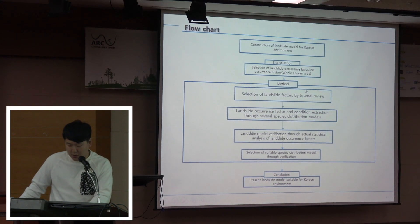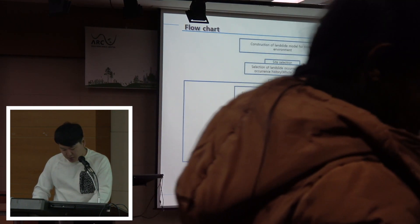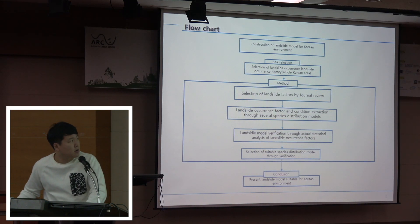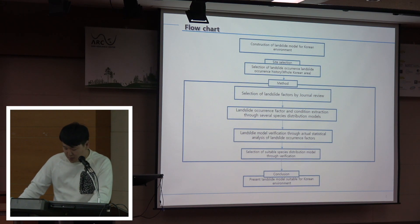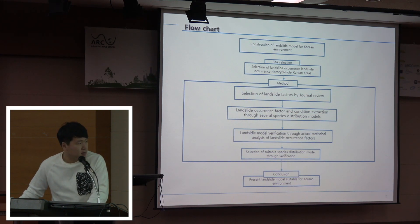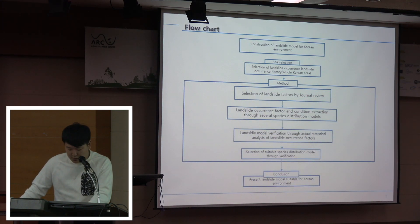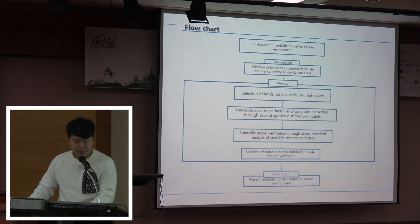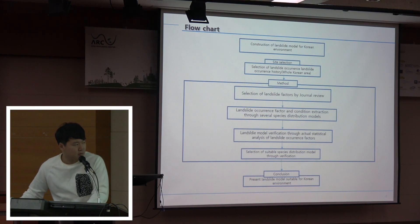This is the flow chart. Research material is provided by the National Disaster Management Institute and verified through actual statistics, extracted from landslide historical data. The final goal is the selection of stable species distribution models through verification.